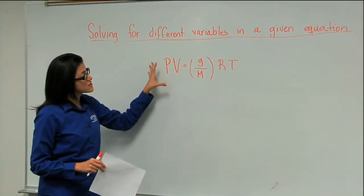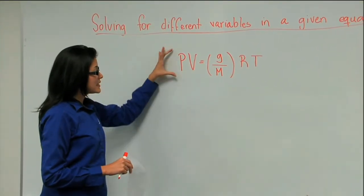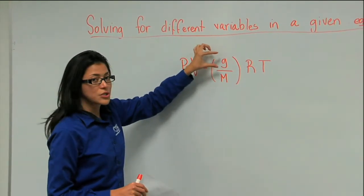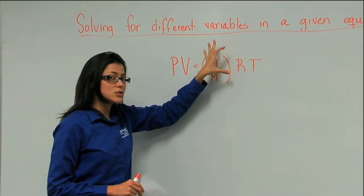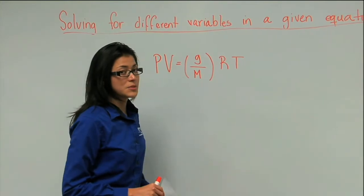This is known as the ideal gas equation, where P stands for pressure, V for volume, G is the grams, M the molar mass, R is the ideal gas constant or the R constant, and T is the temperature.